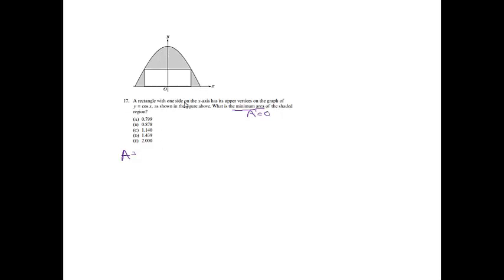The area of the entire part — they told us this was a graph of cosine x. The graph of cosine x hits the x-axis at pi over 2 and also at negative pi over 2. So if I wanted to find that entire area, it would be the integral from negative pi over 2 to pi over 2 of cosine x. That gives the entire cosine x area, and then we subtract out the rectangle.